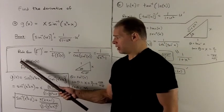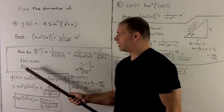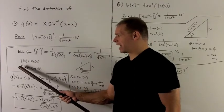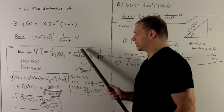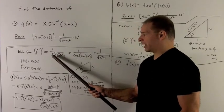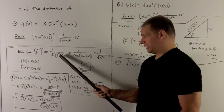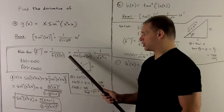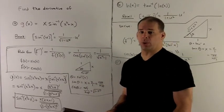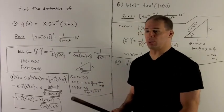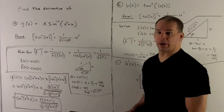Here our original function is sine of x. The derivative of sine of x is just cosine x, so we stick this in. The derivative of f is cosine, the inverse function is sine inverse. And then this turns into one of these problems where we evaluate this and put it in algebraic form.